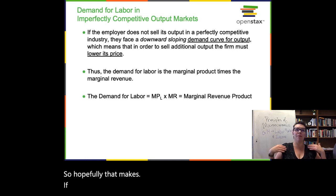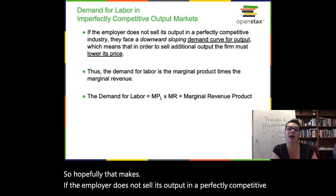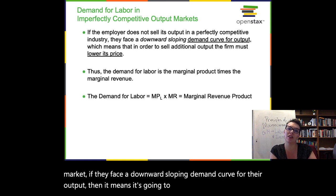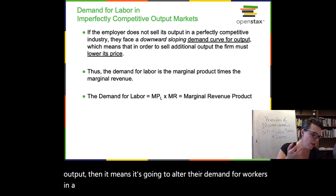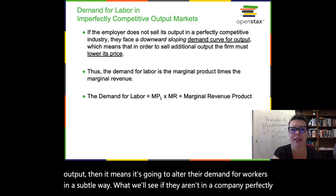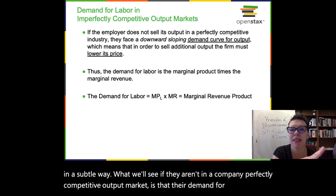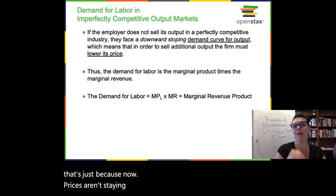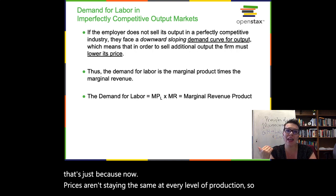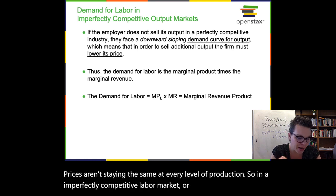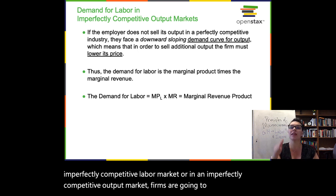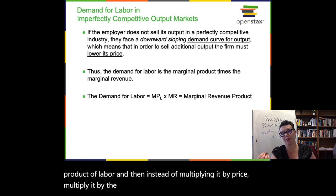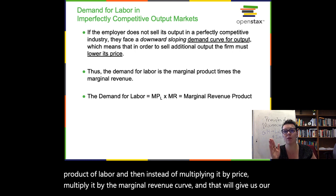If the employer does not sell its output in a perfectly competitive market — if they face a downward sloping demand curve for their output — then it's going to alter their demand for workers in a subtle way. Their demand for labor is going to be based on marginal product times marginal revenue, because now prices aren't staying the same at every level of production. So in an imperfectly competitive output market, firms are going to take the marginal product of labor and instead of multiplying it by price, multiply it by the marginal revenue curve — giving us the marginal revenue product of labor.